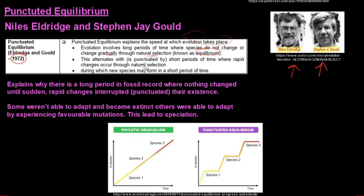And then this alternates with or is punctuated by short periods of time where there is a rapid change that occurs through natural selection, during which new species may form in a short period. So this tells us why there is a long period in the fossil record when nothing changed until there is a sudden or rapid change that is interrupted or punctuated these organisms' existence.